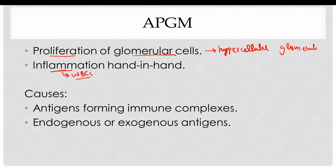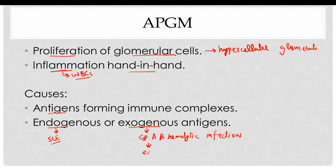Both the proliferation and inflammation go hand in hand, damaging the glomeruli. The inciting agents in these cases are antigens which form immune complexes. These antigens can either be endogenous, such as in autoimmune diseases like systemic lupus erythematosus (SLE), or exogenous, acquired from outside, such as in group A beta-hemolytic infections where exotoxin B acts as an antigen. These antigens, either endogenous or exogenous, form antigen-antibody complexes resulting in glomerular inflammation.